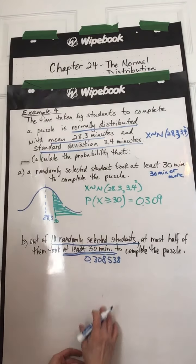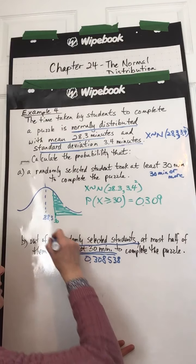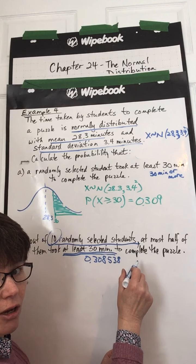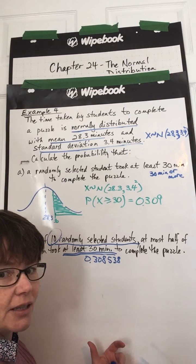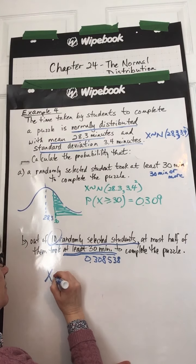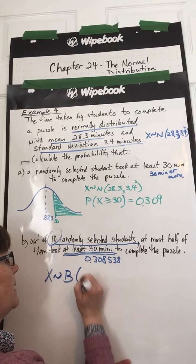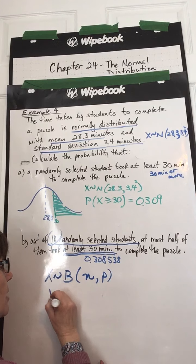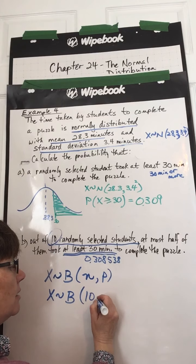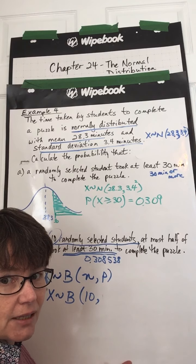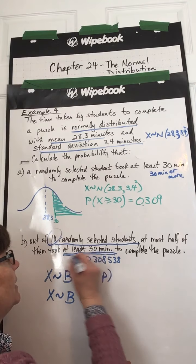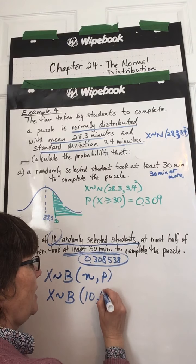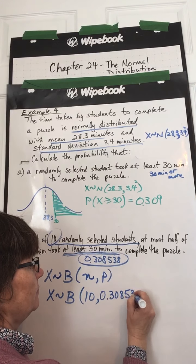All right, this is now binomially distributed. We are either looking for, of these 10 folks selected, we're looking for either they're taking 30 minutes or longer, or they're not taking 30 minutes or longer. So that's why it becomes now binomially distributed. This is distributed binomially. OK, remember next comes N and then P. OK, so N is the number of trials. Well, how many trials are we looking at? We're looking at 10. And the probability of success, so the probability of the thing that we're looking for is the probability that takes them at least 30 minutes or more. So that's this probability. Calculate it from part A.